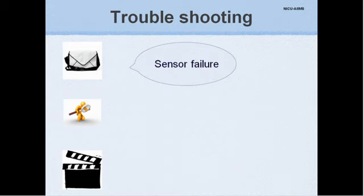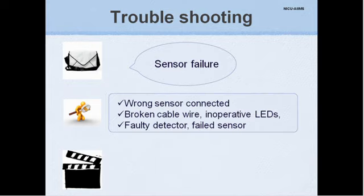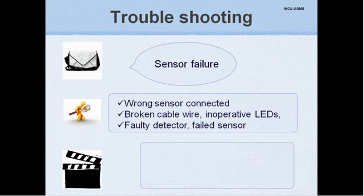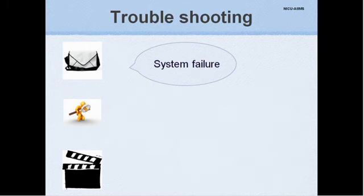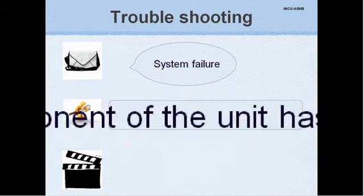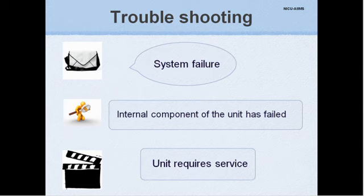There is serious trouble when the message displays sensor failure as the causes could be multiple ranging from wrong sensor, broken cable wire, inoperative LEDs, faulty detector to failed sensor. The way out is by replacing the sensor. When there is a system failure message, some internal component of the monitor has failed and the entire unit requires service.